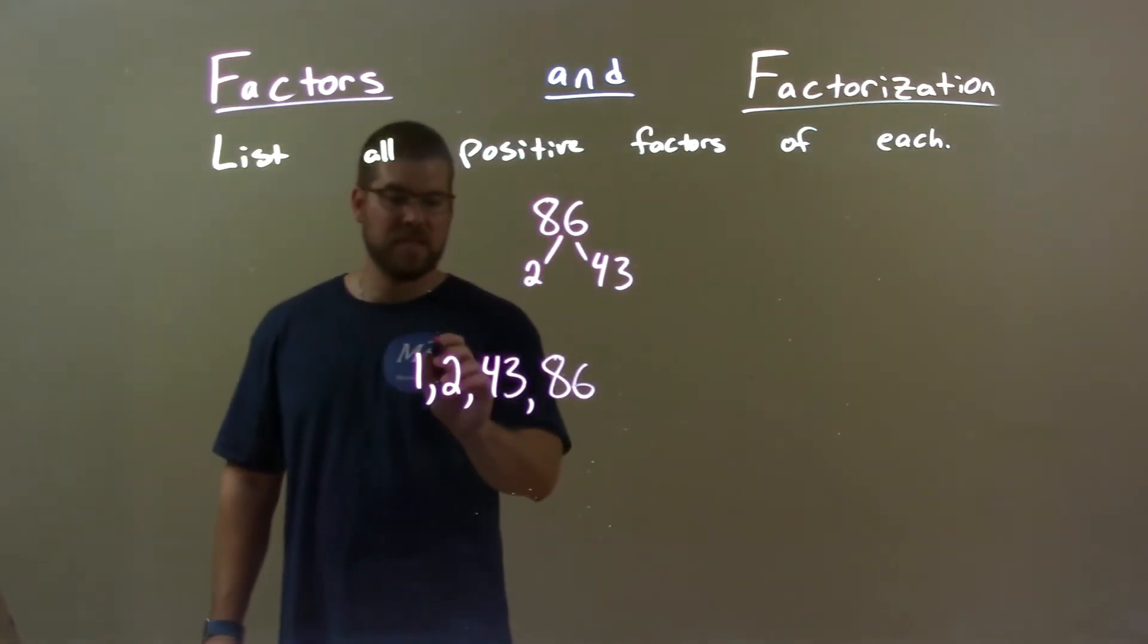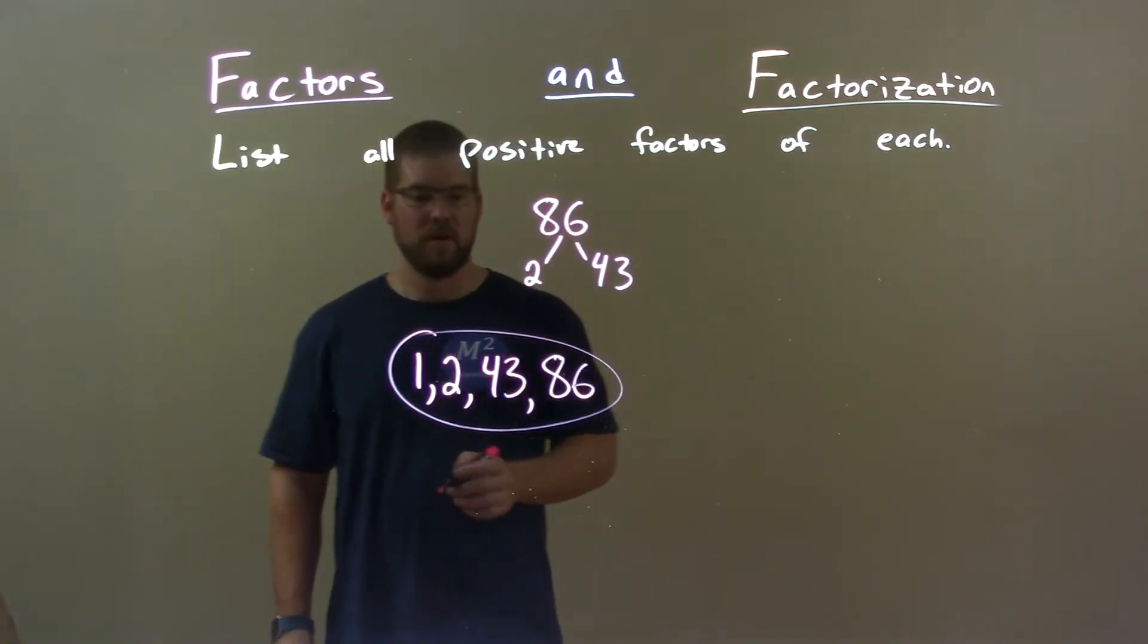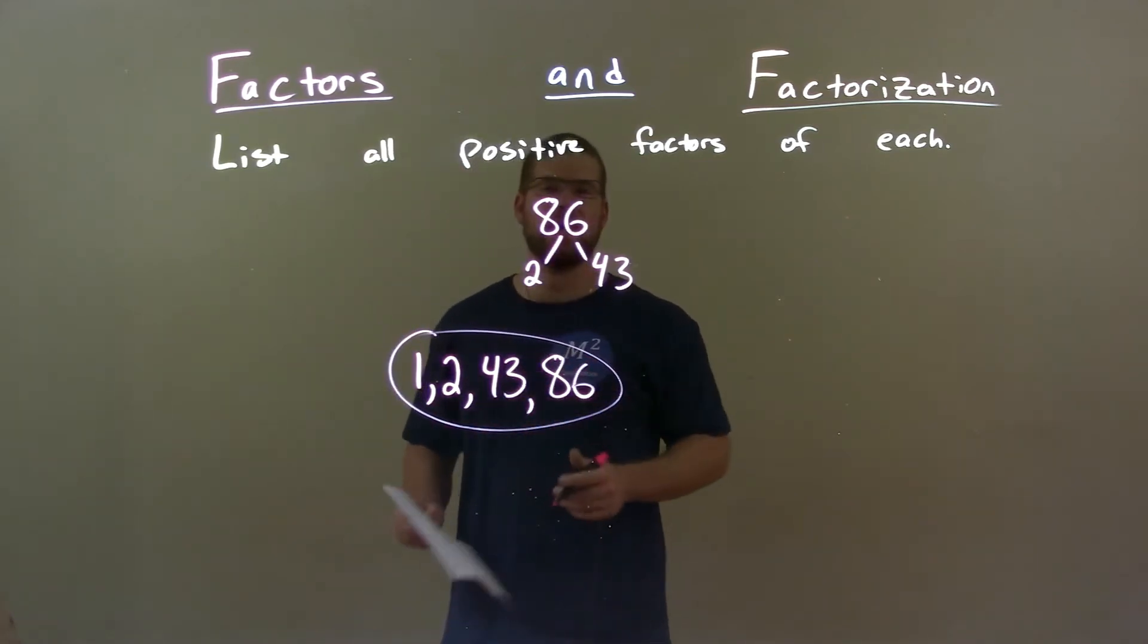So now I'm actually done. My list is just four numbers long: 1, 2, 43, and 86.